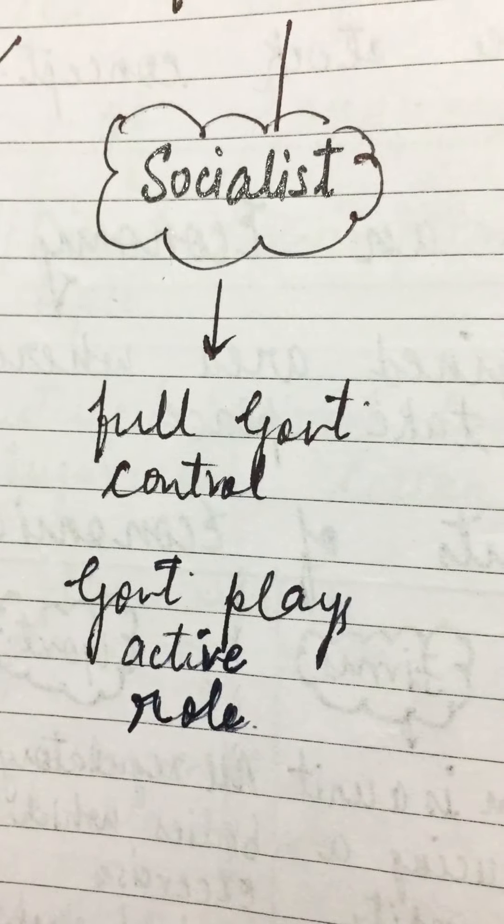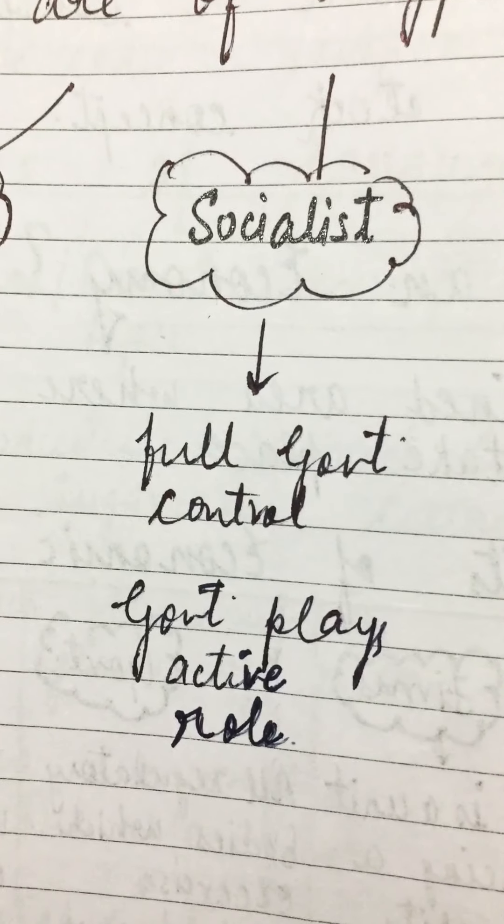Then come the demerits. In a socialist economy, there is no incentive to hard work - if someone works hard, they don't get extra benefit. There is a loss of freedom. In a capitalist economy you have freedom to choose, freedom to consume, freedom to inherit property, and freedom to produce any product. But in a socialist economy, freedom is restricted because the government is the leader and controller.